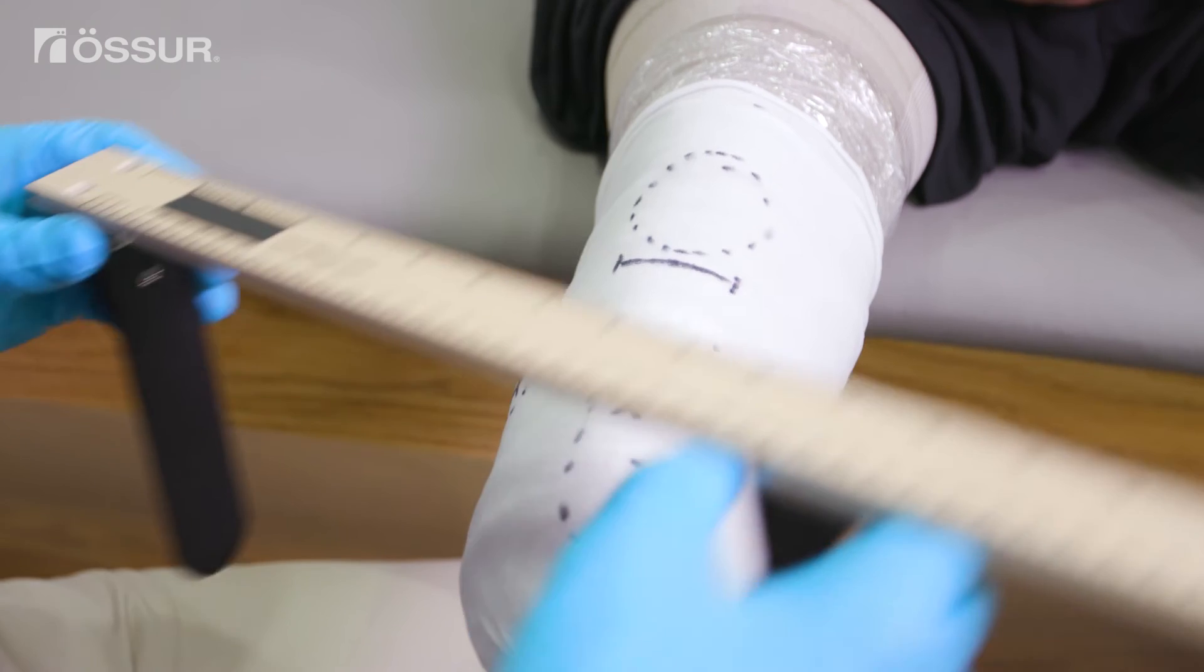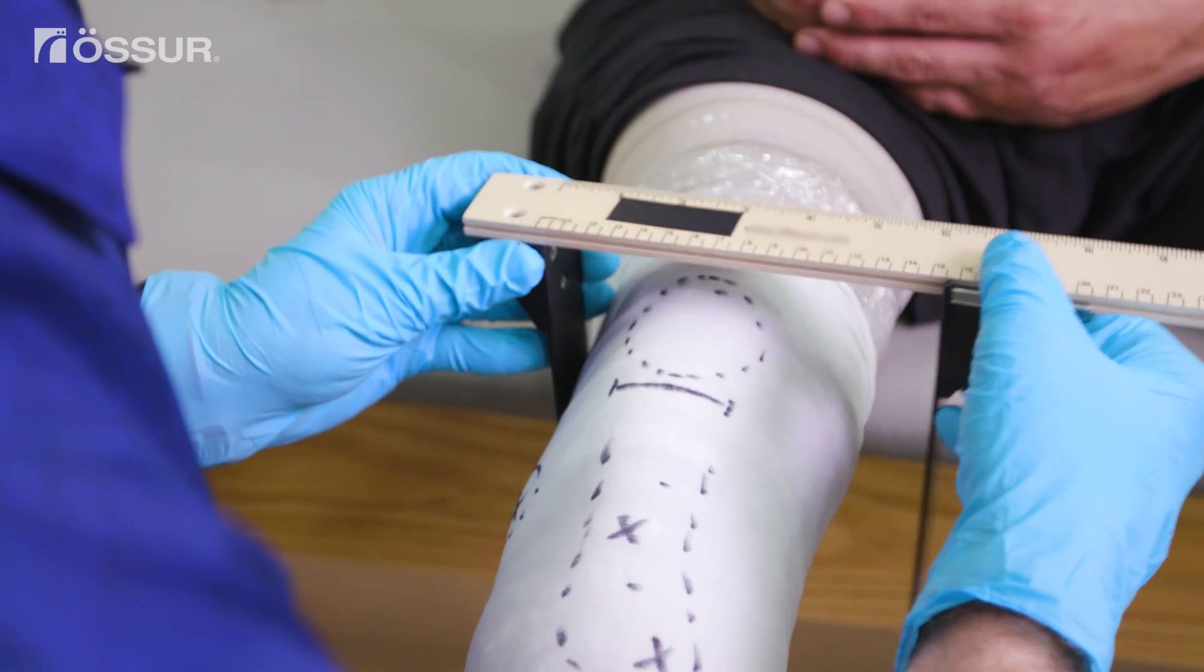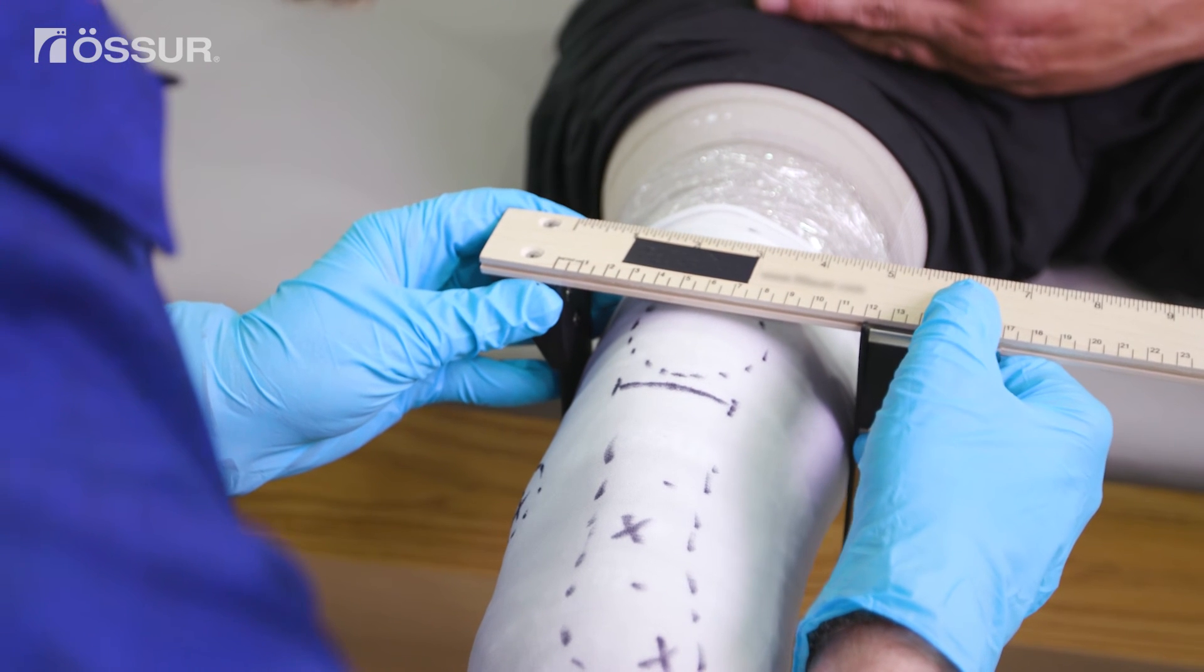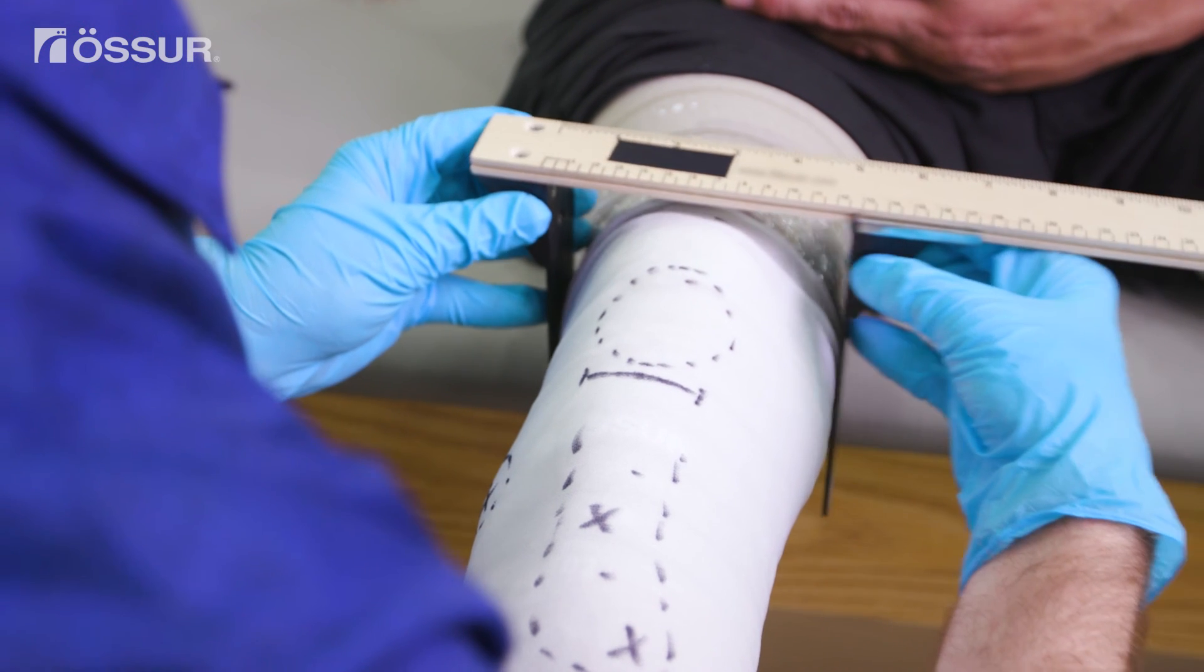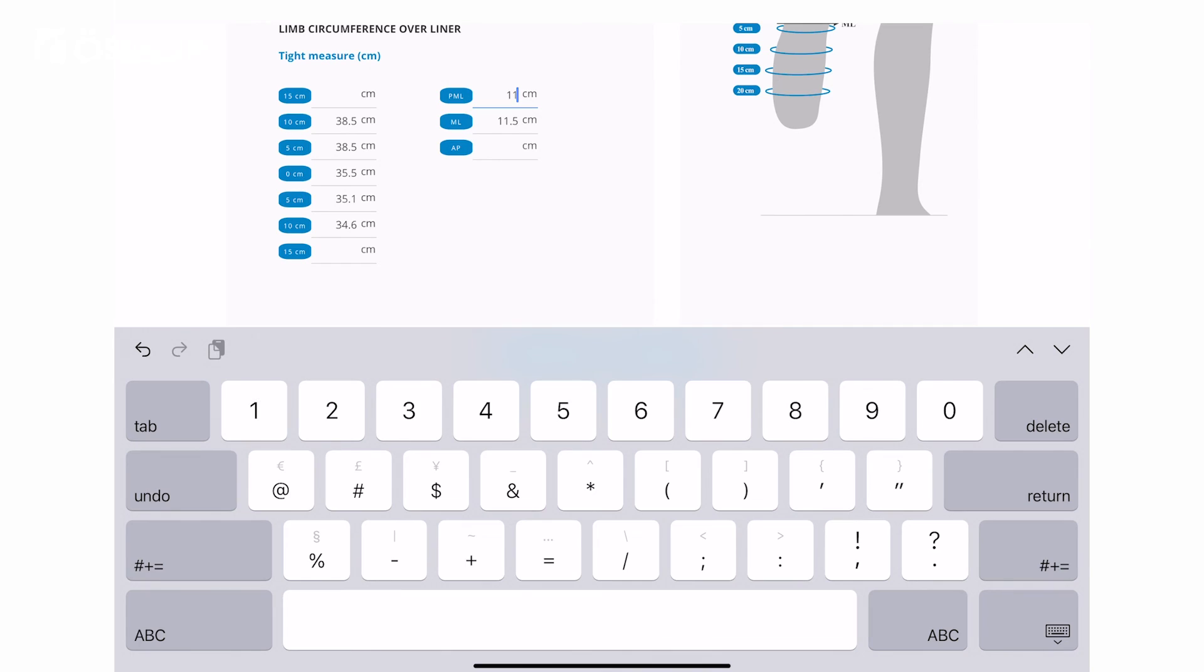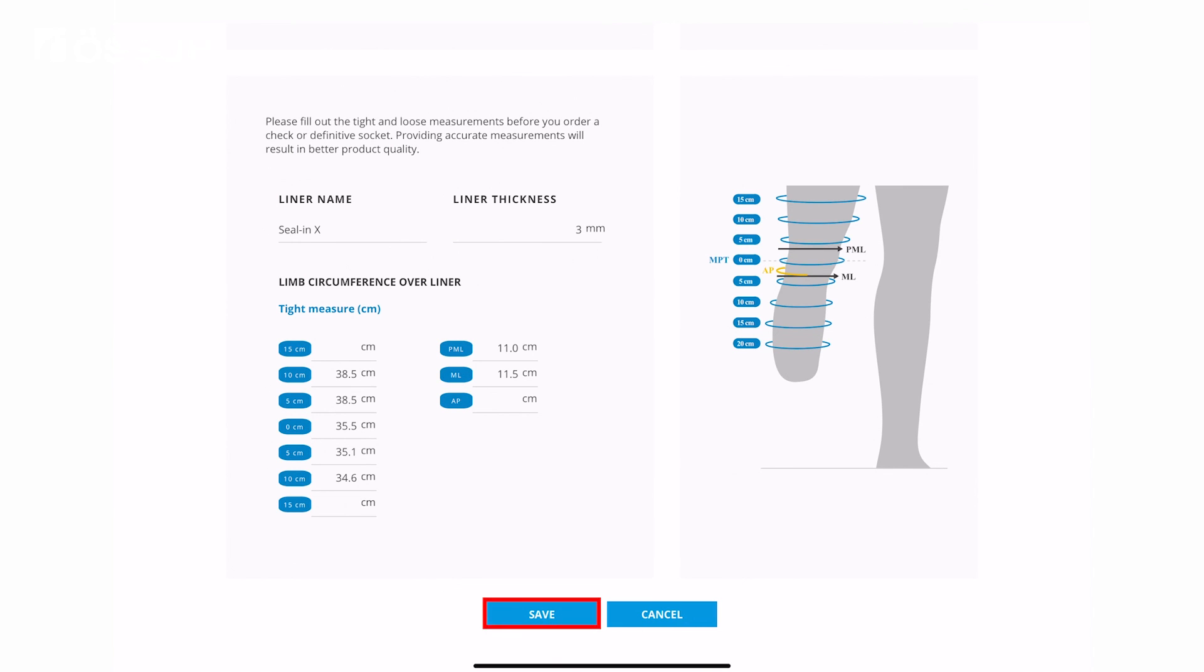After completing circumferences, measure the medial lateral distance, even with the condyles, using an ML gauge. Then measure the proximal medial lateral distance just above the condyles. After inputting all the fields, press save, and the information will be stored inside the portal.